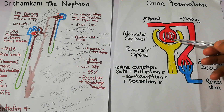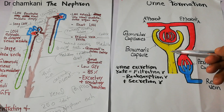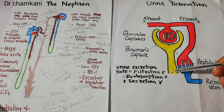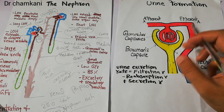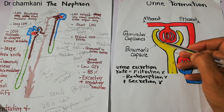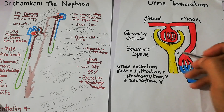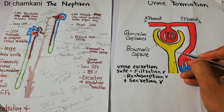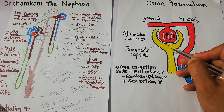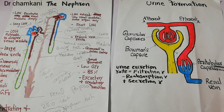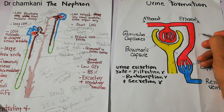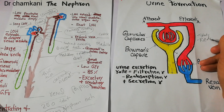Once the filtrate has entered the Bowman's capsule and started moving through the tubules of the nephron, some substances which were filtered during the filtration process get reabsorbed into the blood vessels — the peritubular capillaries. So they move from the tubules back into the peritubular capillaries. This process is known as reabsorption. So initially filtration occurs, then reabsorption occurs.